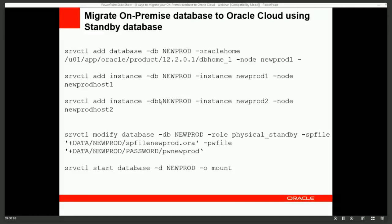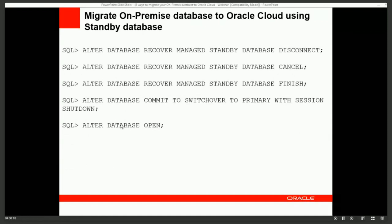For the Oracle Cloud RAC instance, use SRVCTL ADD DATABASE and SRVCTL ADD INSTANCE commands to register the database, specify the role as physical standby, and start it in mount mode. Perform recovery, stop recovery, perform the switchover, and open the database. If the cloud database doesn't work as expected for any reason, you can switch back to the on-premise database, find and fix the problem, then switch over again.